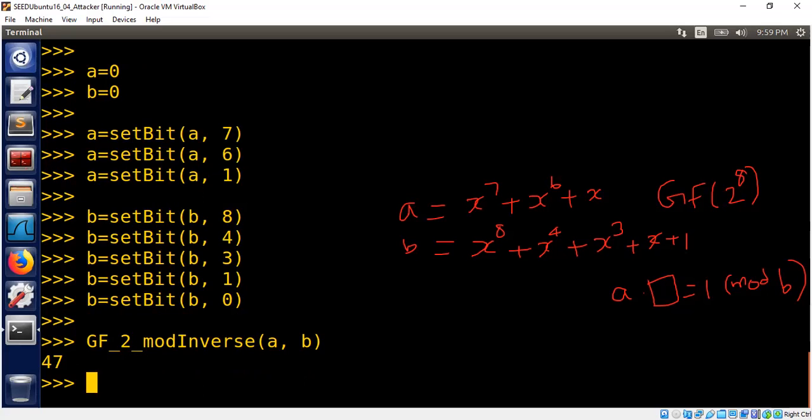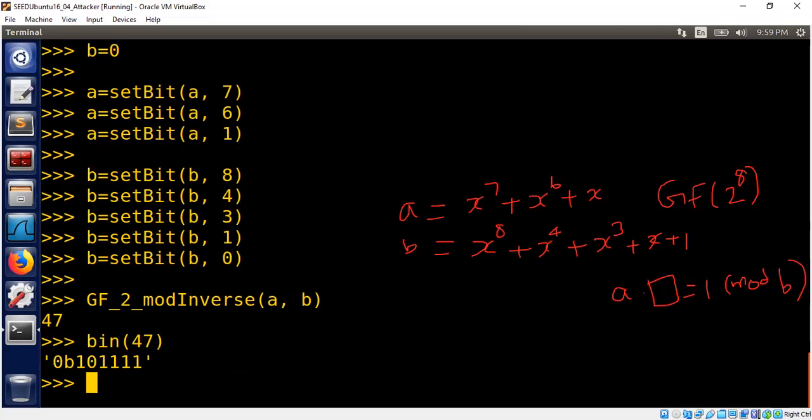What is 47? 47 is another polynomial. Of course, we have to interpret it in binary to see the polynomial itself. So the polynomial is x power 5, x power 4 is 0, x power 3.